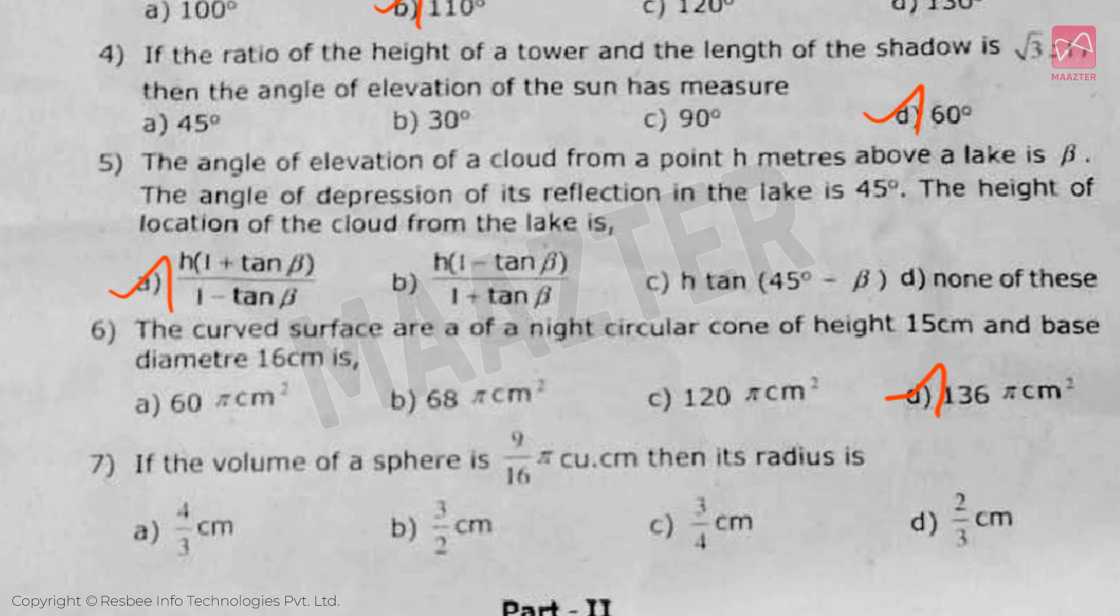Next, if the volume of a sphere is 9 by 16 pi cubic centimeter, then its radius is, answer is option C.